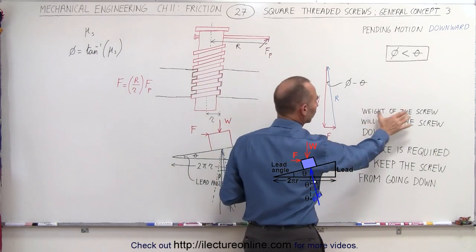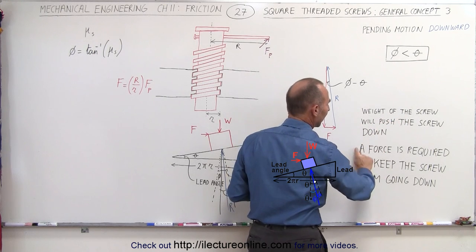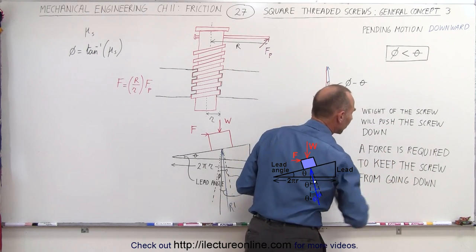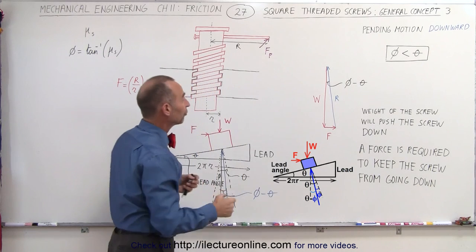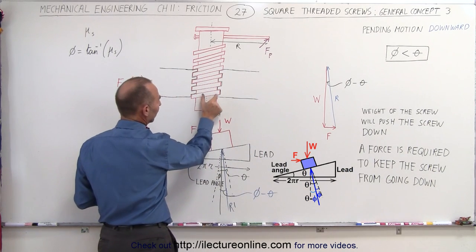So in other words, the weight of the screw will push the screw down, and the force F is required to keep the screw from going down. Now of course, the force F is the force actually on the screw itself.